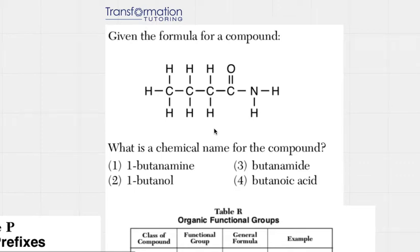Given the formula for a compound, what is the chemical name for the compound? Well, what we can see here is that our molecule contains carbon, and that means it's an organic molecule, so we should be thinking of the organic chemistry part of the Regents Chemistry.